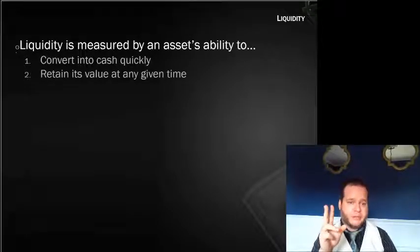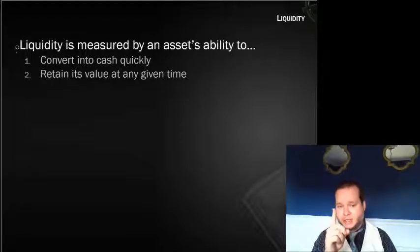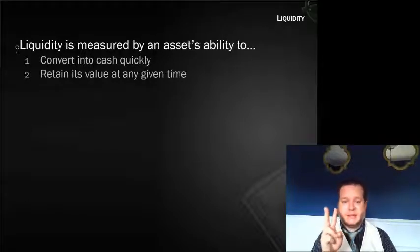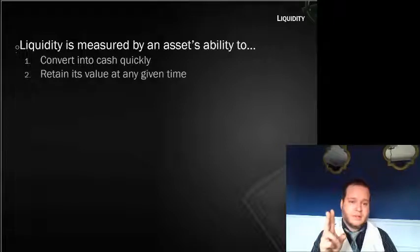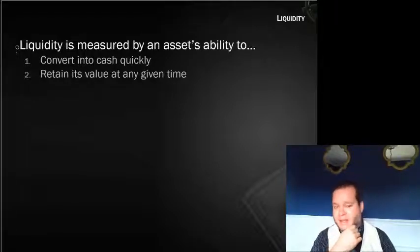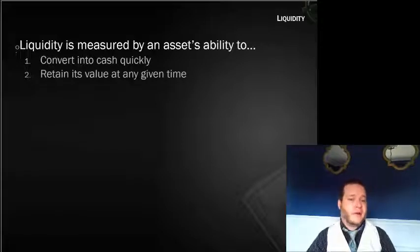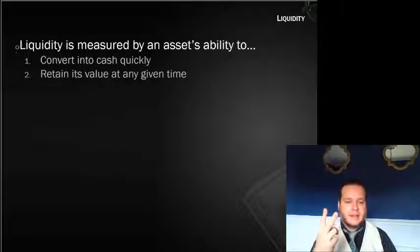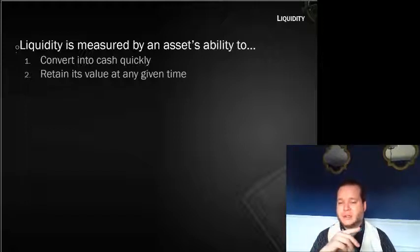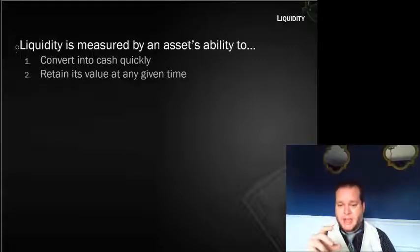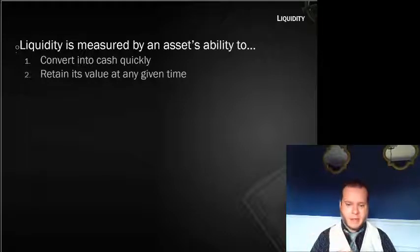Liquidity has two aspects: it's a measure of an asset's ability to become cash quickly, and whether it retains its value. The most liquid asset other than cash itself is your checking account — you can get cash out very fast, and it holds its value. The value only goes up or down when you make deposits or withdraw money, so a checking account is super liquid.